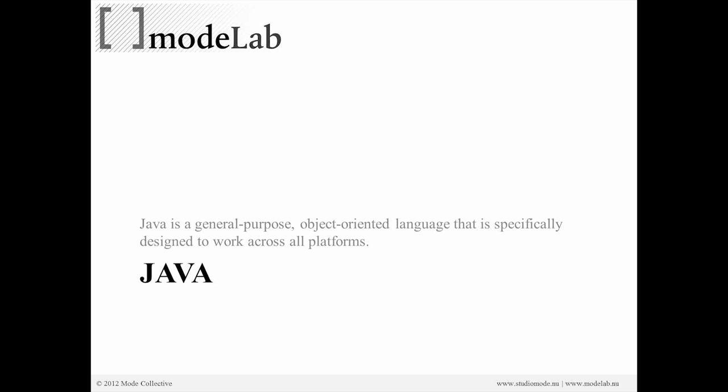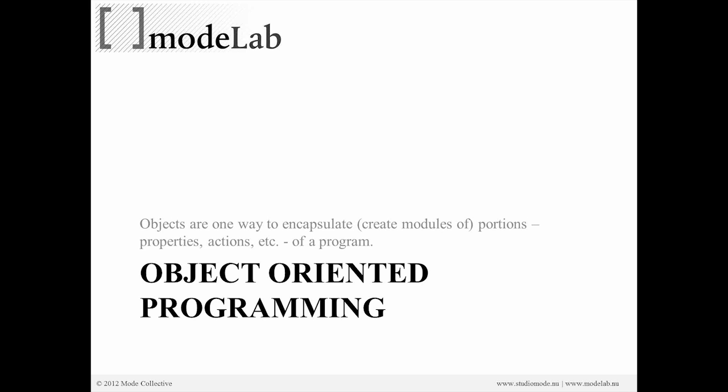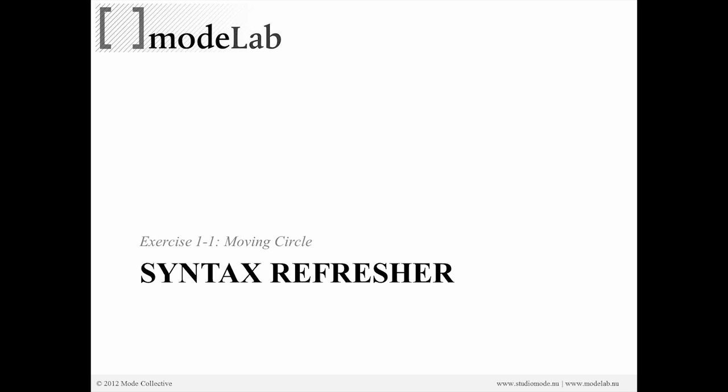Objects, if we're talking about what object-oriented programming is—objects are just one way to encapsulate, by that we mean create modules of portions of a program. Those portions might be a property, they might be an action, an operation, etc. In the general sense, objects are a way to encapsulate one part of our code.